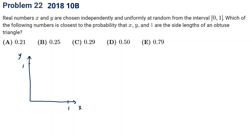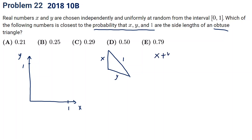Okay, let's come back. The question is: what is the following number closest to the probability that x, y, 1 are the side lengths of an obtuse triangle? We know 1 will be the largest side since x and y are both smaller than or equal to 1. So we need x plus y greater than 1 — this is the triangle condition. And secondly, because it's an obtuse triangle, we need x squared plus y squared smaller than 1.